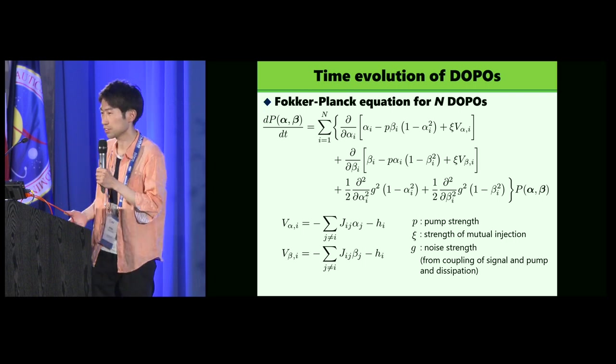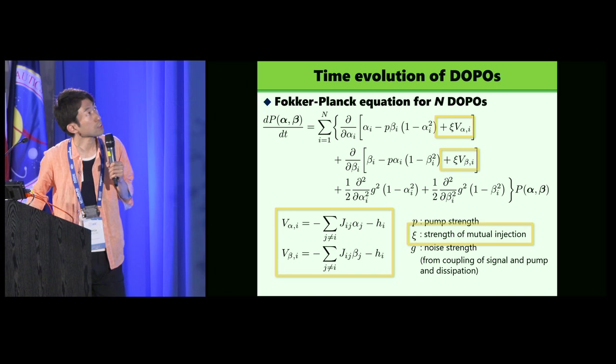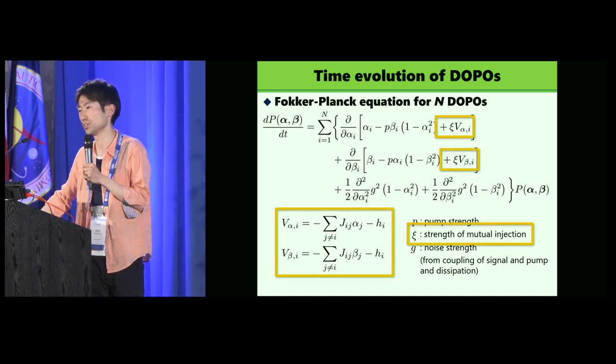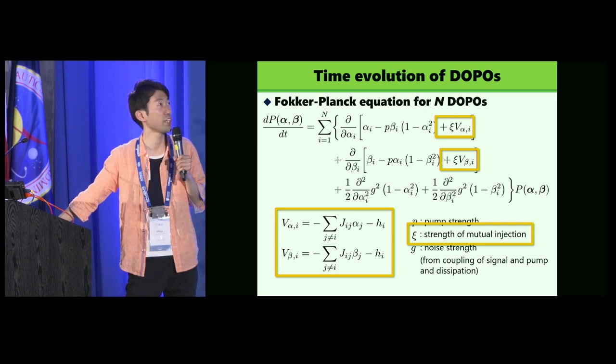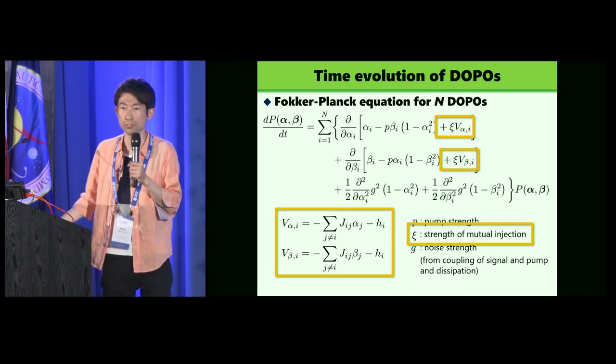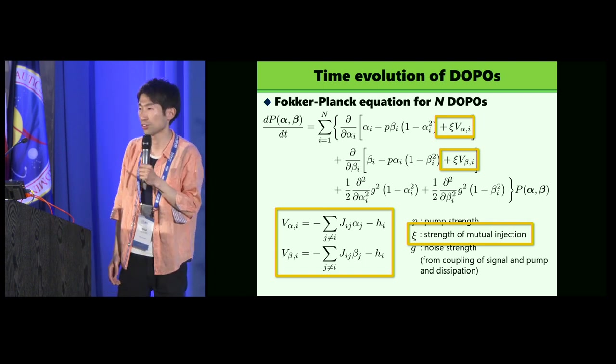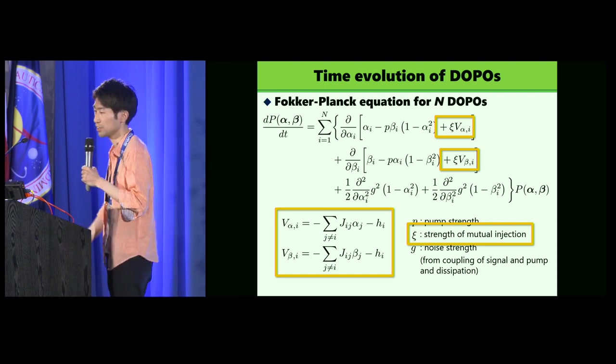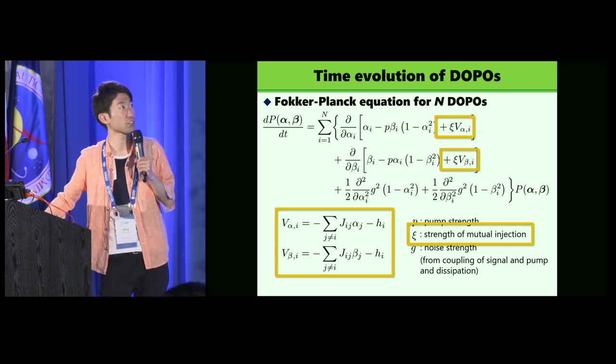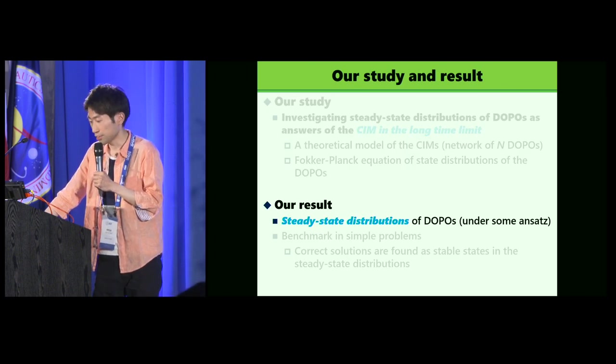We next derived the dynamics and the Fokker-Planck equation of that distribution P. After some calculations, we obtain the Fokker-Planck equation. These terms show the interaction between the DOPOs, and G_ij and H_i are parameters appeared in the Ising Hamiltonian for target optimization problems. G_ij is a coupling constant of Ising spins, and H_i is for longitudinal field. And C controls the strength of interactions.